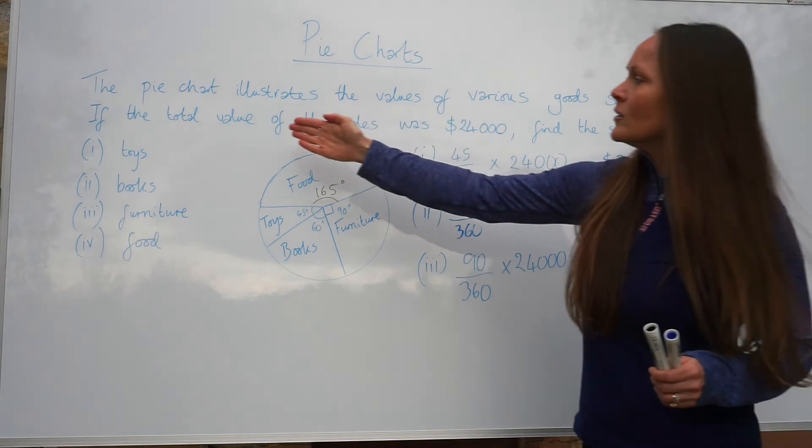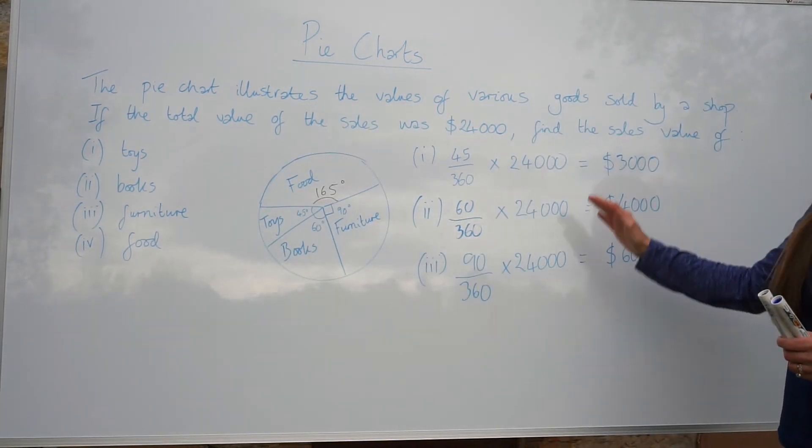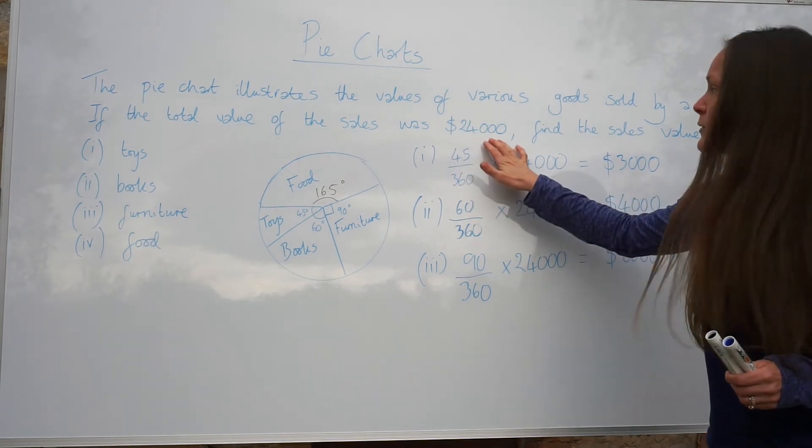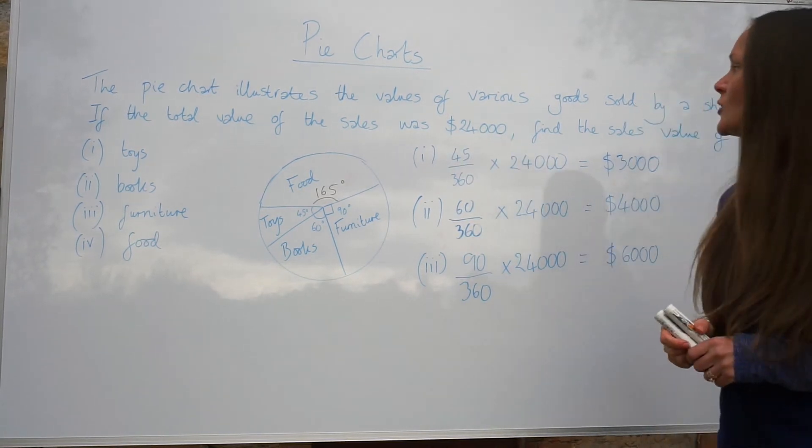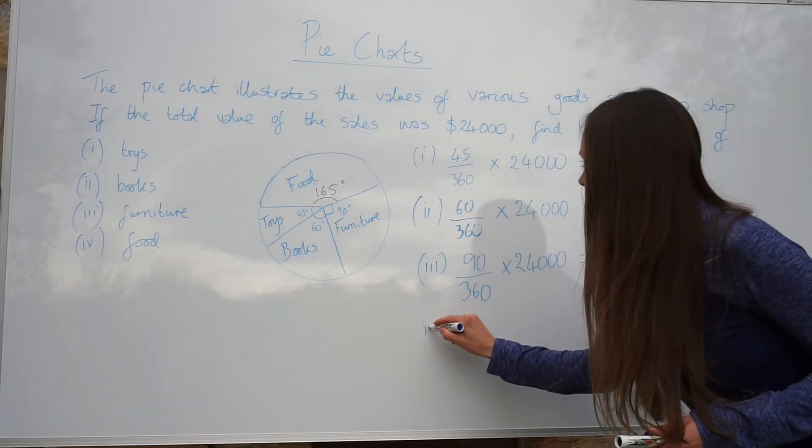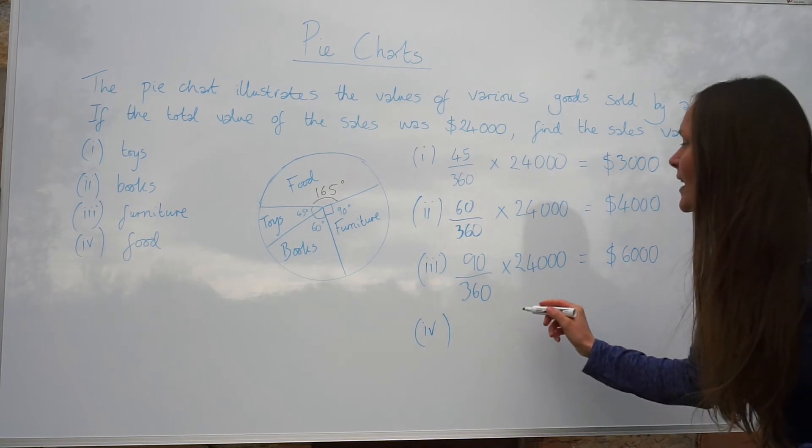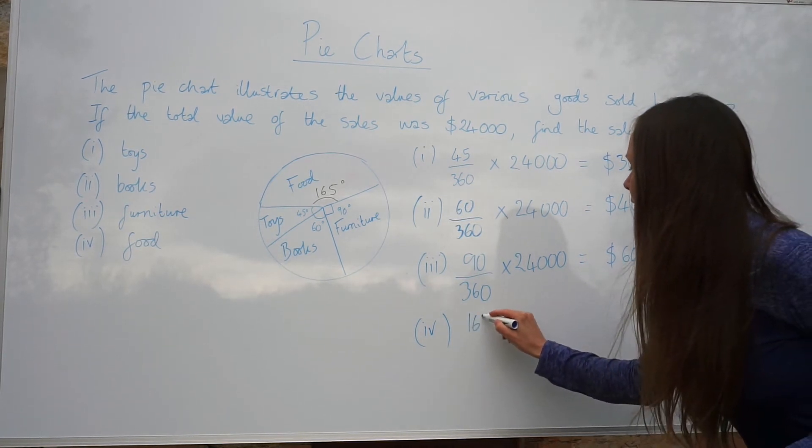Because these are the only goods we're talking about in this question, all of the values should add up to 24,000. So you've got two different methods to use. I'm just going to stick with the same method. Seems a bit easier now that I've got the number of degrees to do it that way.